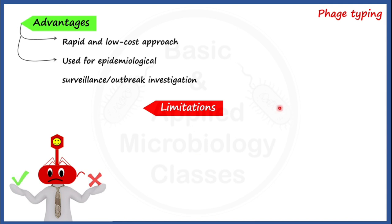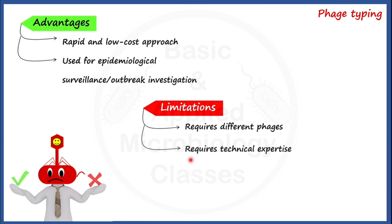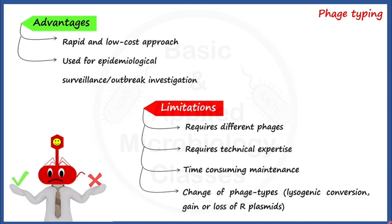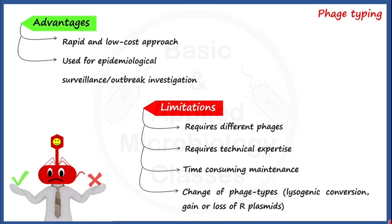For limitations: different types of phages are required for identifying different species or strains of bacteria. It requires technical expertise — only trained personnel can handle and perform phage typing assays. Maintenance of phages is time consuming. Phages can also undergo mutations which can lead to lysogenic conversion or gain or loss of R plasmids, causing changes in phage types. I hope you enjoyed this content. If you found it helpful, don't forget to press like and subscribe to our channel. Thank you so much, keep watching.